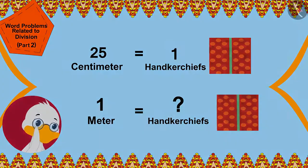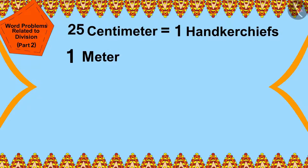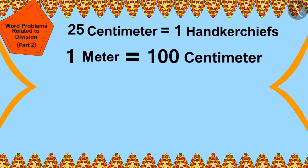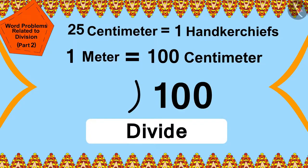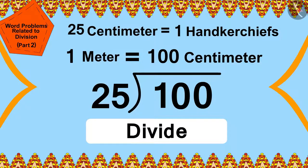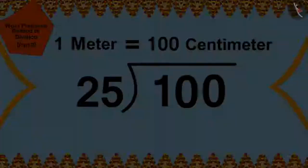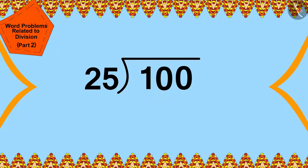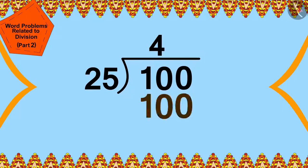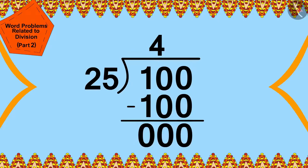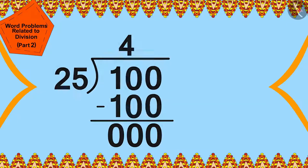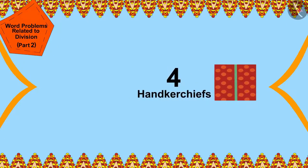Cha Cha wondered: 1 meter is equal to 100 centimeters. I can find this answer by dividing 100 centimeters by 25. In this way, Cha Cha divided 100 by 25. Cha Cha will be able to sew 4 handkerchiefs with 1 meter long cloth.